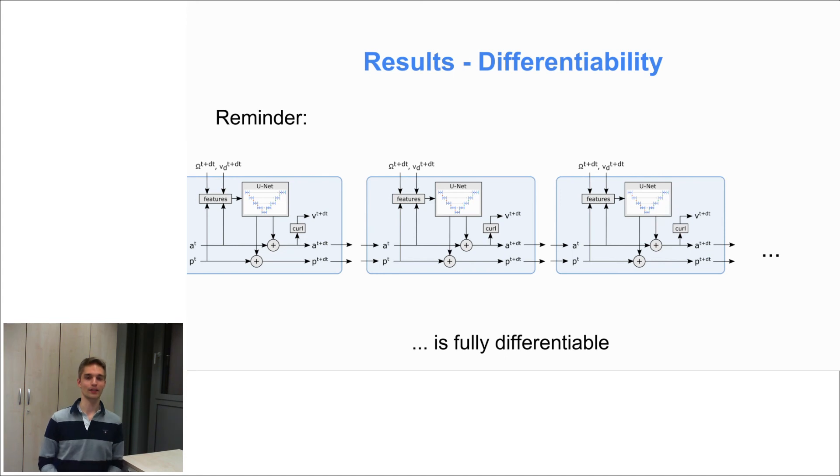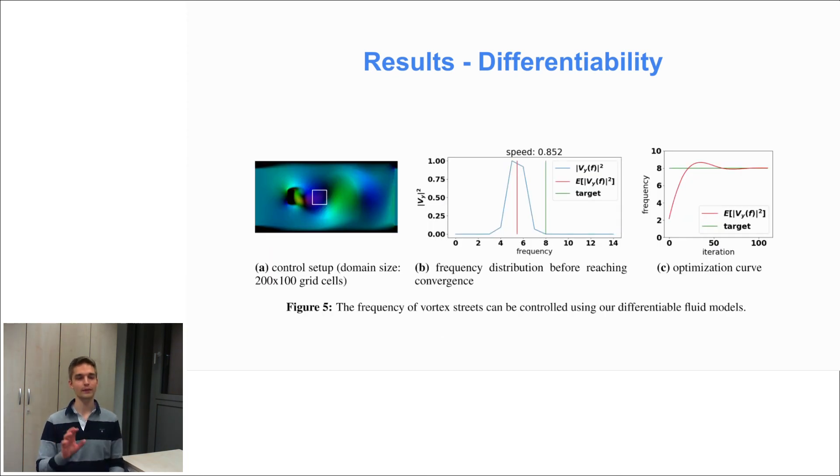Finally, we also performed a little proof-of-concept experiment that exploits the differentiability of our method. So remember that our whole fluid pipeline is fully differentiable and if we want to compute gradients, we can simply do backpropagation through time. And the idea was here to control the frequency of the von Kármán vortex street behind an obstacle by changing the flow field or the flow velocity.